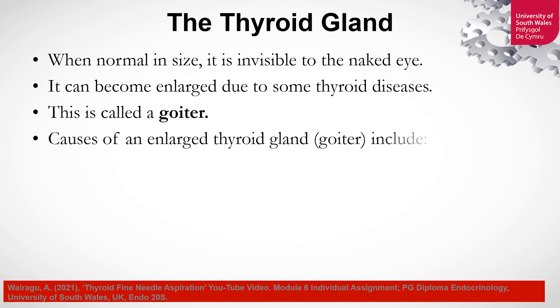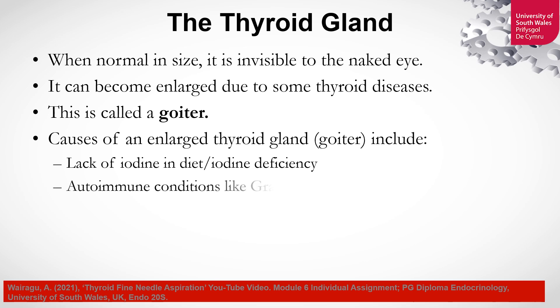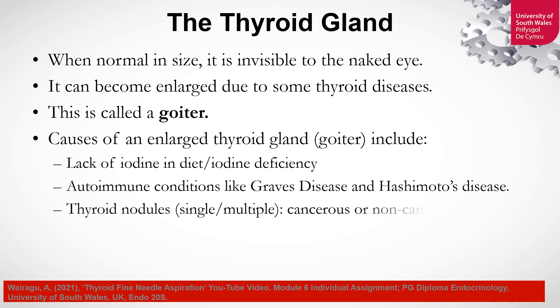What can cause the thyroid gland to be enlarged? This includes lack of iodine in the diet, also called iodine deficiency; some autoimmune conditions like Graves' disease and Hashimoto's disease; thyroid nodules, which can be multiple or single, and can be cancerous or non-cancerous; some form of inflammation; or during pregnancy, the thyroid gland can also become enlarged.